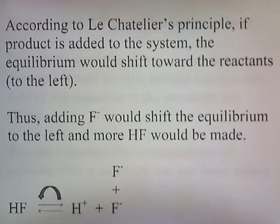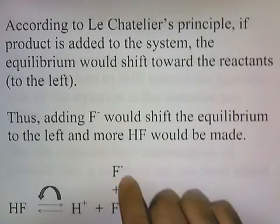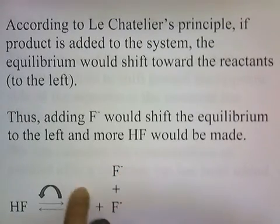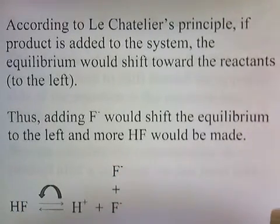According to Le Chatelier's principle, if product is added to the system, the equilibrium would shift towards the reactants, to the left. Thus, adding fluoride would shift the equilibrium to the left and more HF would be made. If you dumped in some extra fluoride, the equilibrium would shift this way. More hydrogen fluoride would be made.